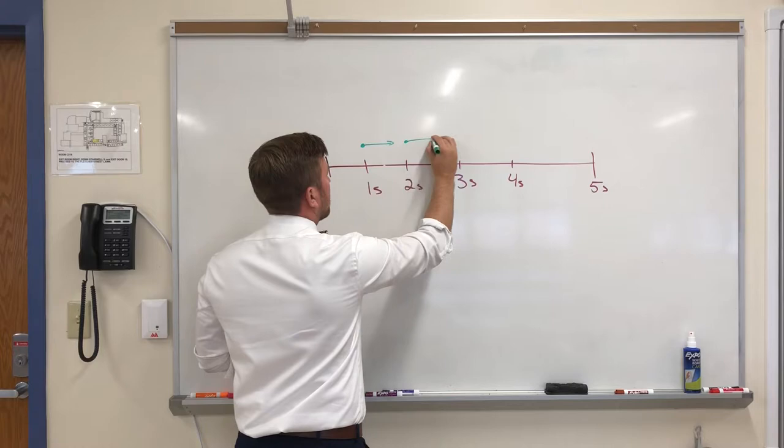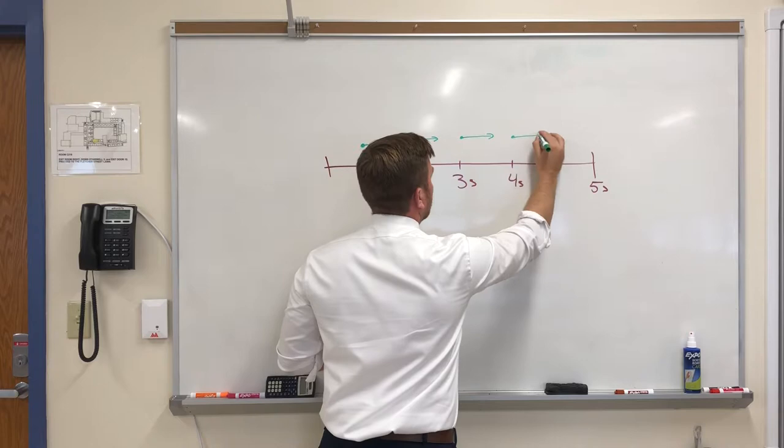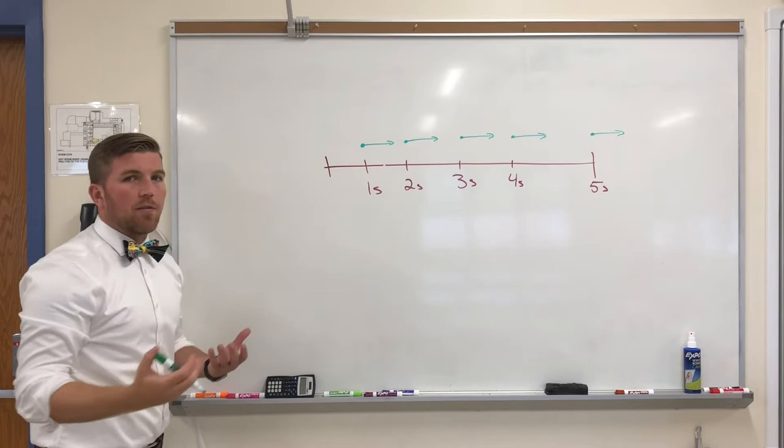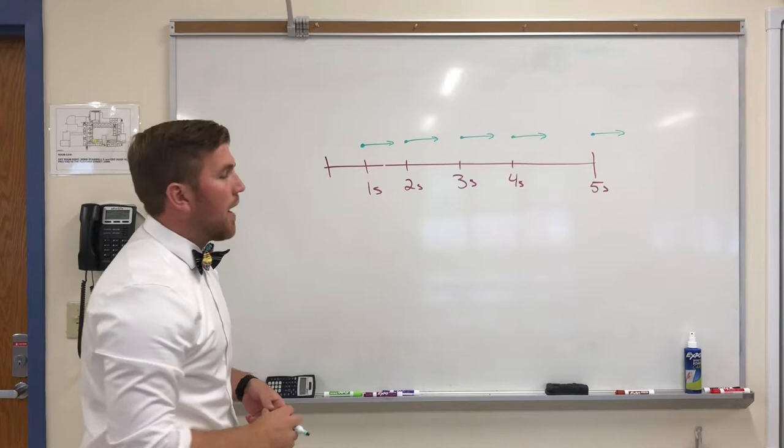Now at every second, it's going to have the same size arrow, and it's going to be traveling the same distance, because it's a constant velocity cart. So the velocity is never changing. The distance traveled is going to be the same every second that we go through.